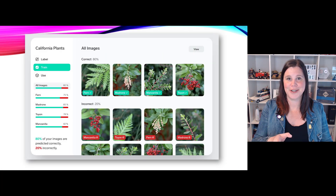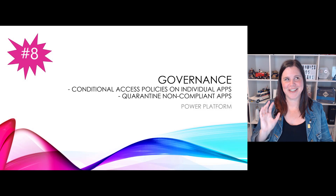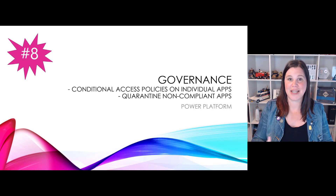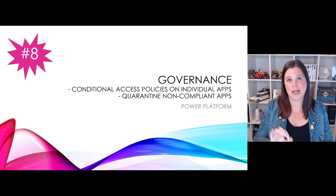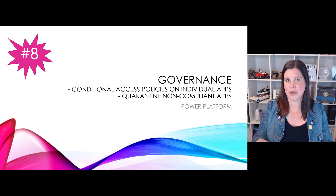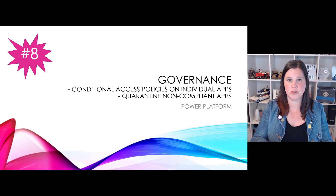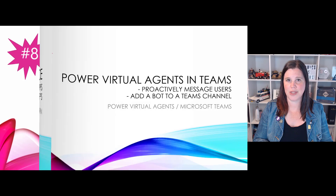There's a picture of Lobe AI to give a sense of what that can do. At number eight, governance — lots of ongoing work on improving and getting more granular with governance features in Power Platform. New additions include conditional access policies on individual apps and the ability to quarantine non-compliant apps, so you can restrict things like requiring multi-factor authentication, blocking certain users or guests, or limiting usage to specific conditions.